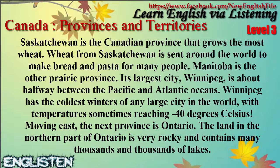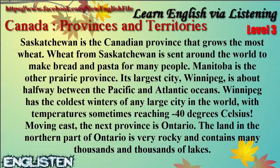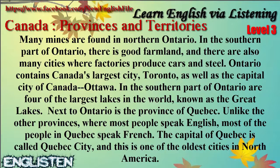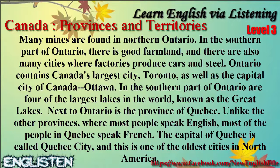Moving east, the next province is Ontario. The land in the northern part of Ontario is very rocky and contains many thousands and thousands of lakes. Many mines are found in northern Ontario. In the southern part of Ontario, there is good farmland, and there are also many cities where factories produce cars and steel. Ontario contains Canada's largest city, Toronto, as well as the capital city of Canada, Ottawa. In the southern part of Ontario are four of the largest lakes in the world, known as the Great Lakes.